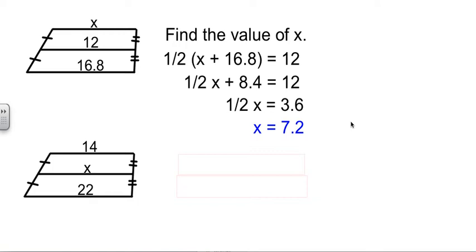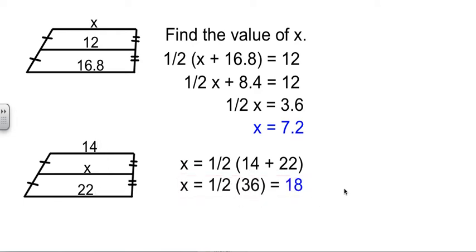That's if we know the midsegment and we're looking for one of the sides. What if we don't know the midsegment, but we know the two bases? Well, then it's easy. The midsegment is the average between them, so the average of 14 and 22. Half of 36 is 18. So midsegment's not that tough. We like midsegments.